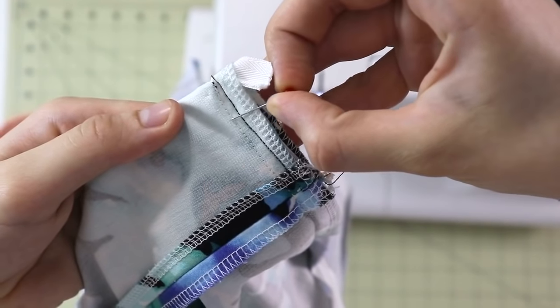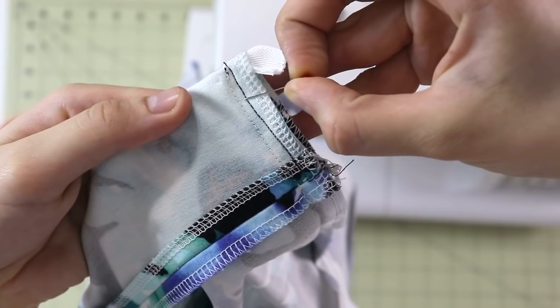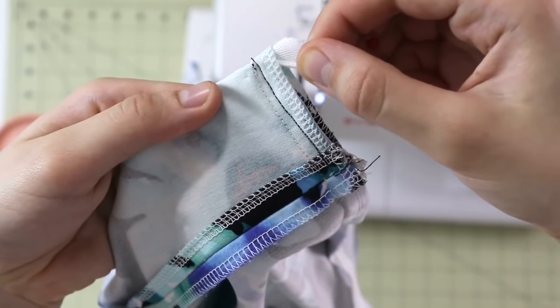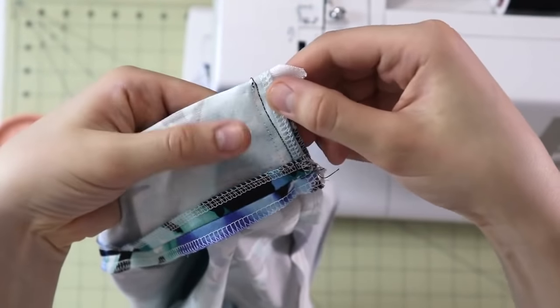And once you're done, it will look like so. So the white thread is where we attached the zipper. The black thread is the stitch that I did to enclose the waistband.